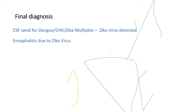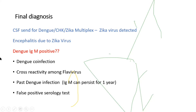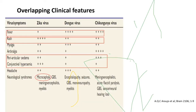Since dengue IgM was positive, what could explain this? It could be dengue co-infection along with Zika virus, cross-reactivity of IgM among flaviviruses, past dengue infection (since IgM can persist for one year), or a false positive serology test due to technical errors. Dengue, Zika, and chikungunya all present with very similar clinical features — fever, rash, periorbital edema, conjunctivitis — and even neurological signs are present in all three illnesses.